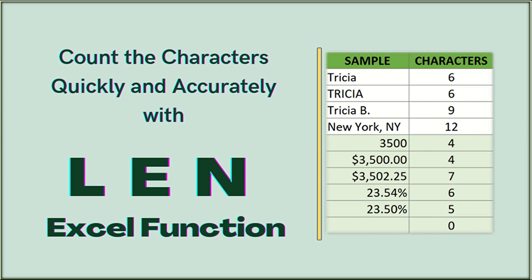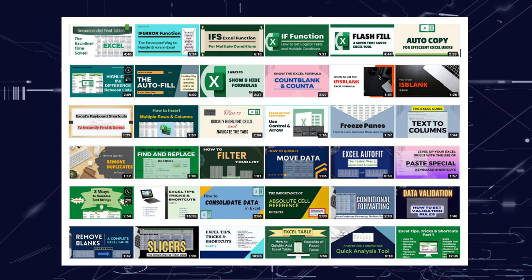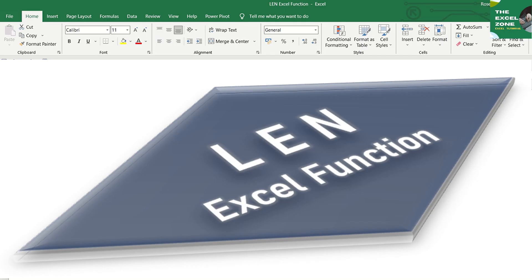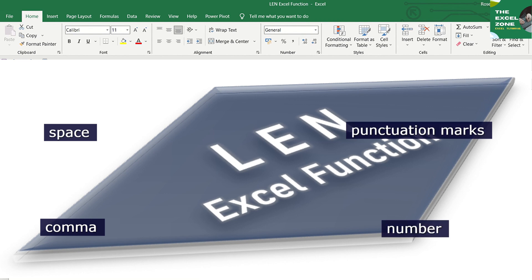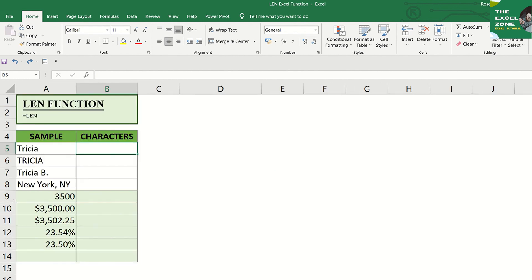LEN is a very simple but useful Excel function. It gets the length of text or counts the number of characters in a given text string. This video will show you various examples. The LEN formula returns the number of all characters including space, comma, punctuation, and numbers in a cell. But it does not include number formatting. Consider these examples.